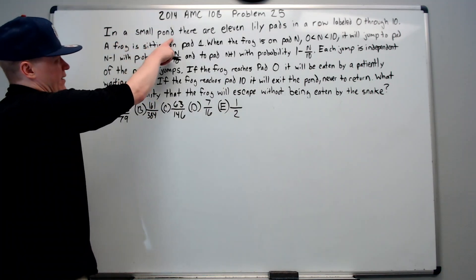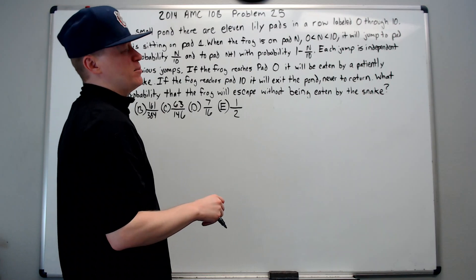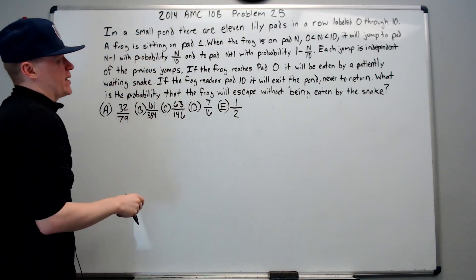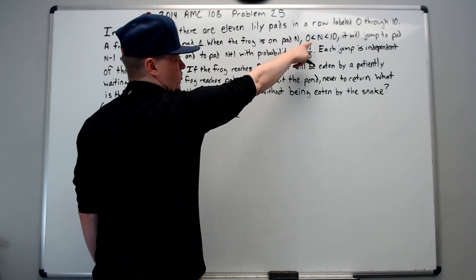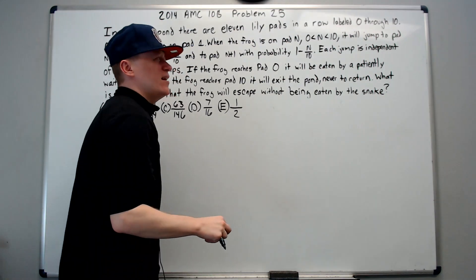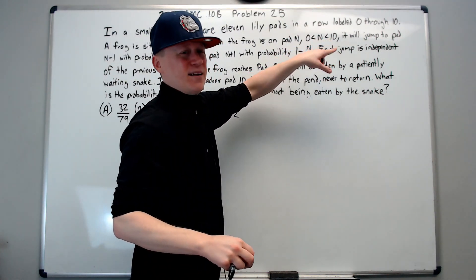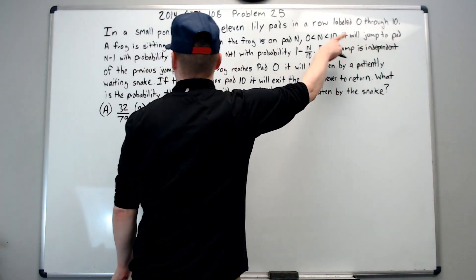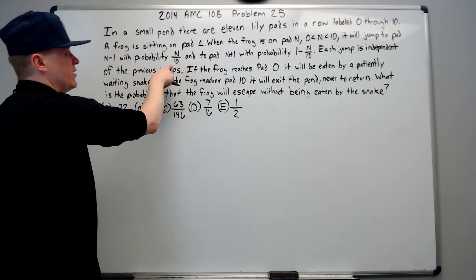In a small pond, there are 11 lily pads in a row, labeled 0 through 10. A frog is sitting on pad 1. When the frog is on pad n, with n being between 0 and 10 — note that 0 and 10 aren't part of n, and there's a reason for that we'll get to in a moment — it will jump to pad n minus 1 with probability n over 10.